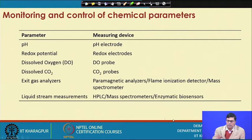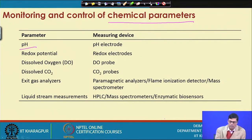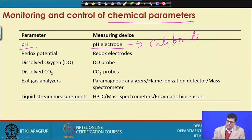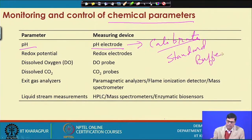These are all physical parameters. Now let us move to chemical parameters. We have pH — monitored using a pH probe. Whenever you use any kind of pH probe, you must first calibrate it with a standard buffer, then put the sample in and find the result.